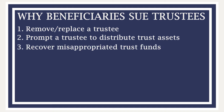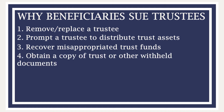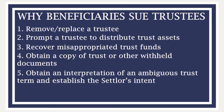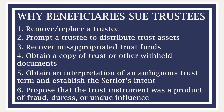Third, recover trust funds that the trustee has misappropriated. Fourth, obtain a copy of the trust or other trust-related information that has been withheld, like tax returns, accounting, or trust assets. Fifth, obtain an interpretation of an ambiguous trust term and establish the settlor's intent. Sixth, propose that the trust instrument was a product of fraud, duress, or undue influence.